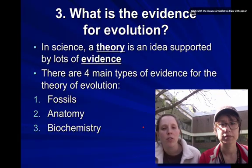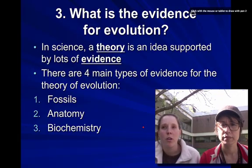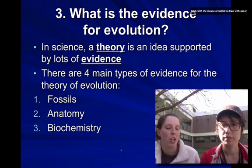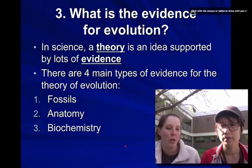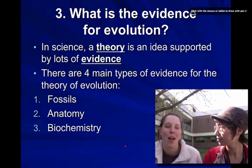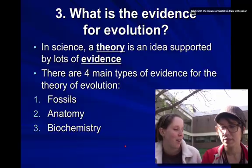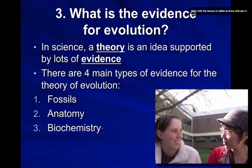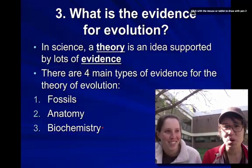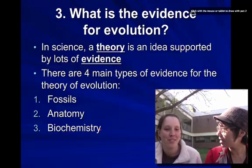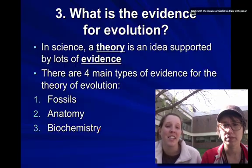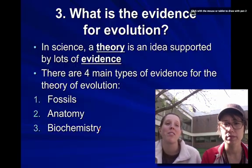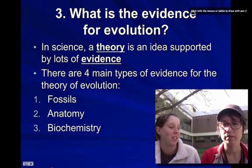When we talk about evolution, a lot of times we hear about the theory of evolution. Theory is a word that's kind of been hijacked by society. Every day when people say 'I have a theory,' it really means they don't have any proof — it's more of an assumption. But in science, we use it very differently. In science, a theory is an idea that is supported by lots and lots of evidence and experiments.